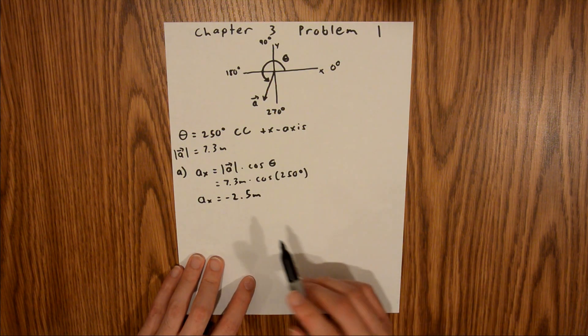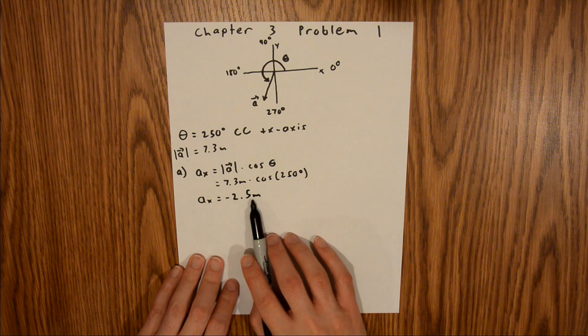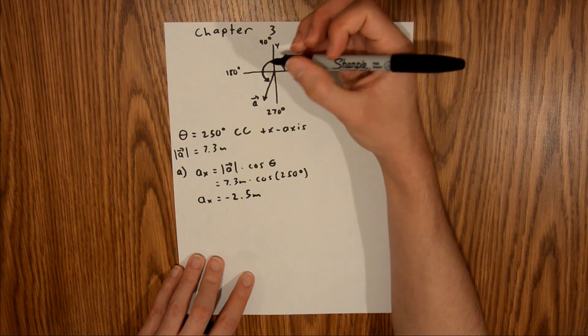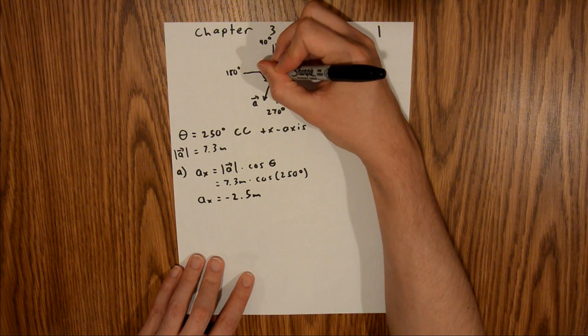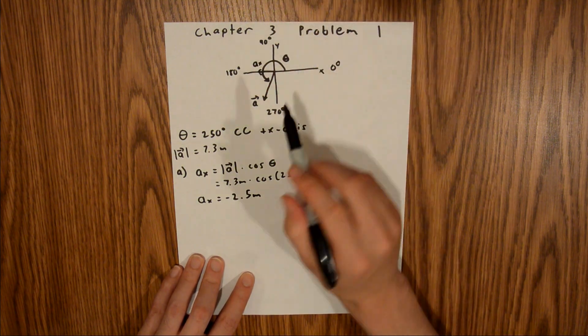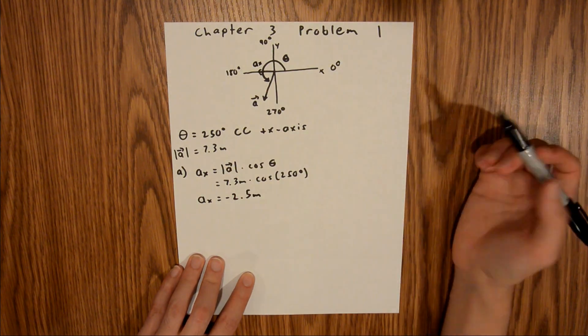And just as a little sanity check for this, we see that we have an x component of 2.5 meters in the negative x direction. So if we look back at our vector here, the x component of this vector is that right there. So that signifies a of x. And if you look at this component, it's pointing in the negative x direction. So that makes sense.